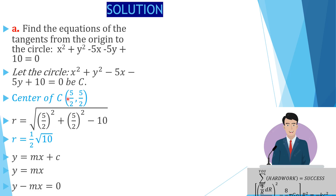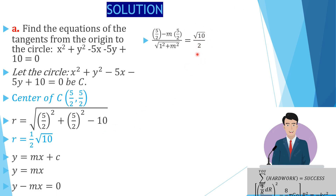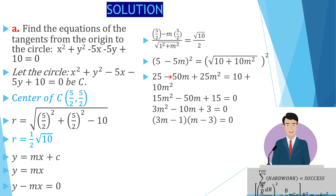We calculate the distance from the center of the circle to this tangent line, which must equal the radius. Using the point-to-line distance formula, we substitute the center coordinates (5/2, 5/2) into the line y − mx = 0: the numerator is 5/2 − m·(5/2), and the denominator is the square root of m² + 1. Setting this equal to the radius and cross-multiplying, then squaring both sides, gives us a quadratic equation.